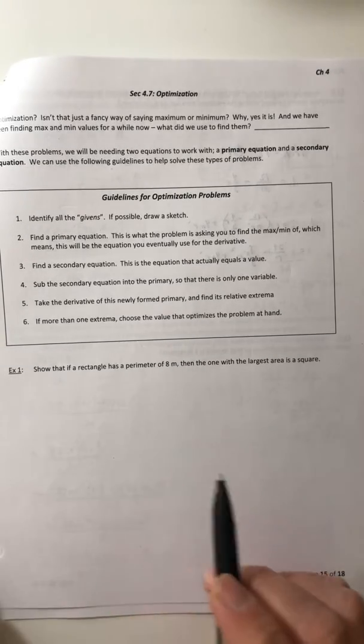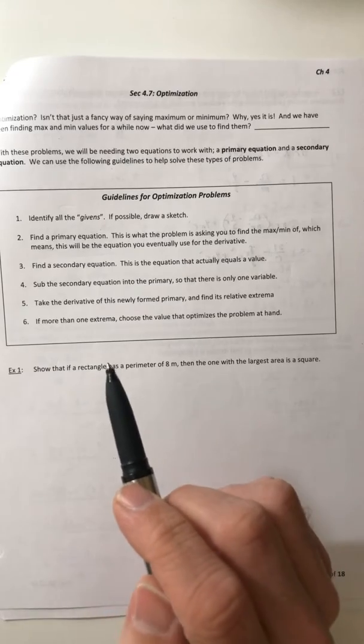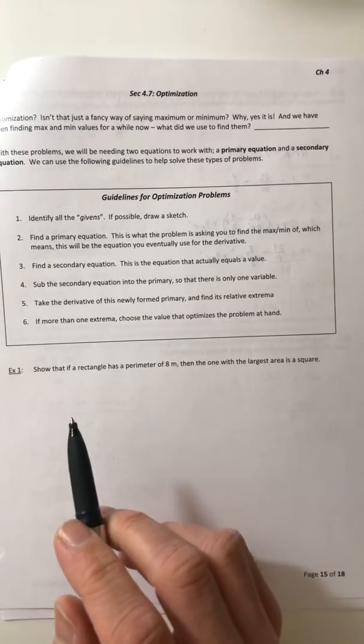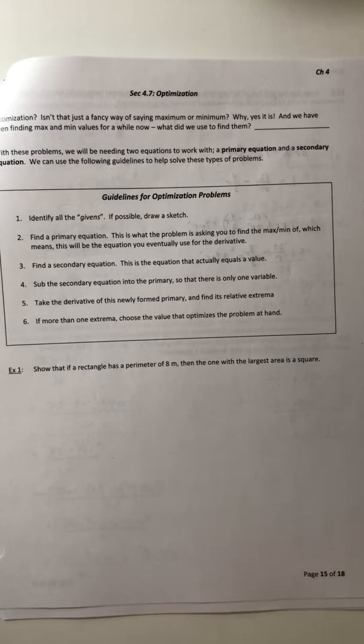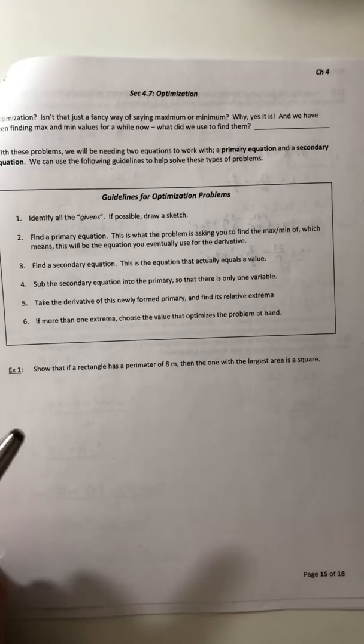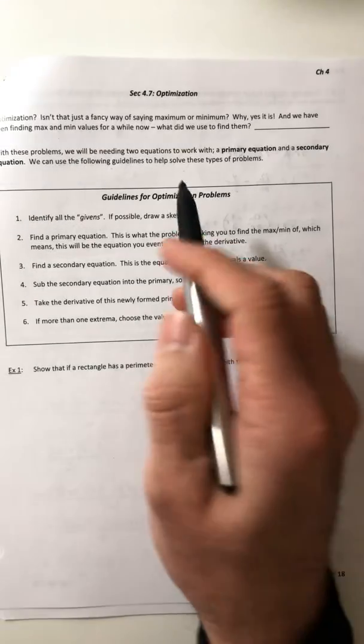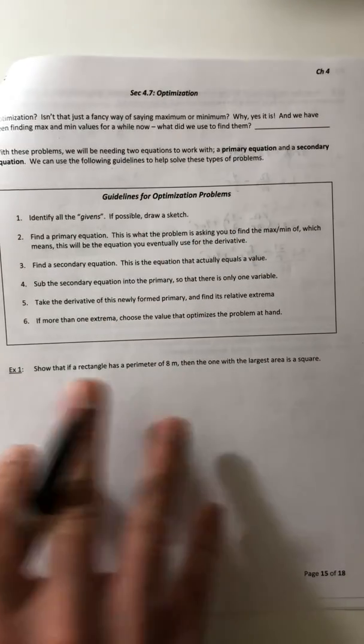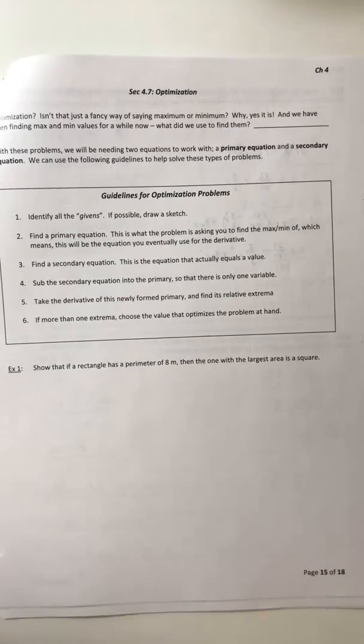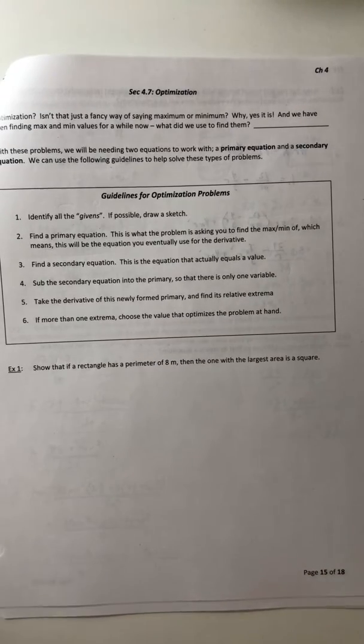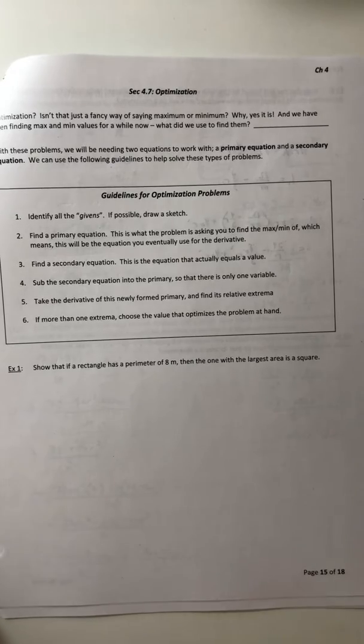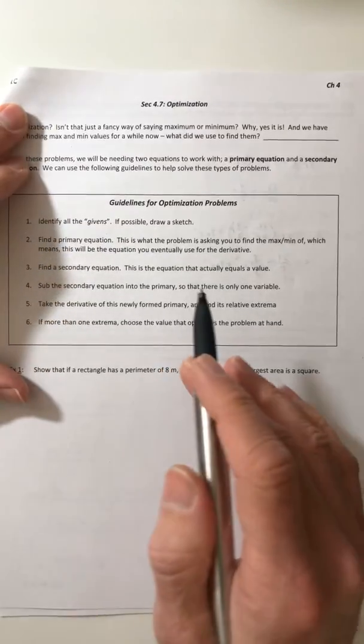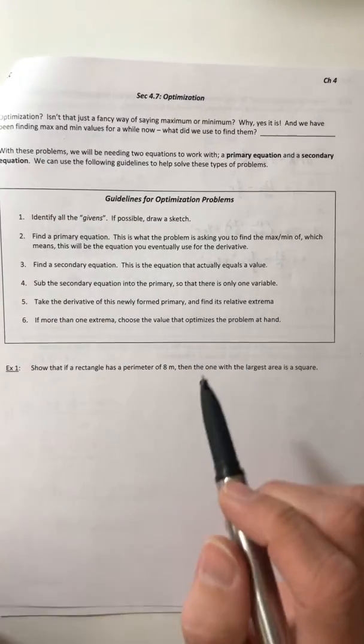Hey there mathletes, this is going to be our last section from chapter 4 and it's going to deal with optimization. The rest of the chapter has been dealing with graphs of functions and what the derivative tells us about the graph. With optimization, we're going to be finding the maximum or minimum of a situation, like what is the maximum area this rectangle could fit or what dimensions would yield the largest volume for a box. These are your real-world application problems, so you guessed it, we are now entering into word problems for chapter 4.